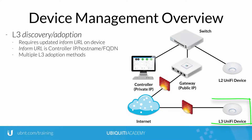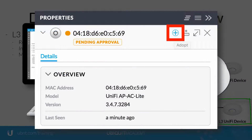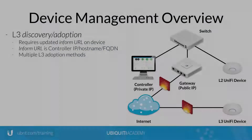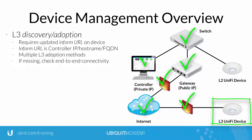After updating the Inform URL, the factory default Unify device will appear in the controller with its known IP address pending adoption, ready to be managed. If the device does not appear, ensure end-to-end IP connectivity exists between controller and device, as well as open management ports at the server.